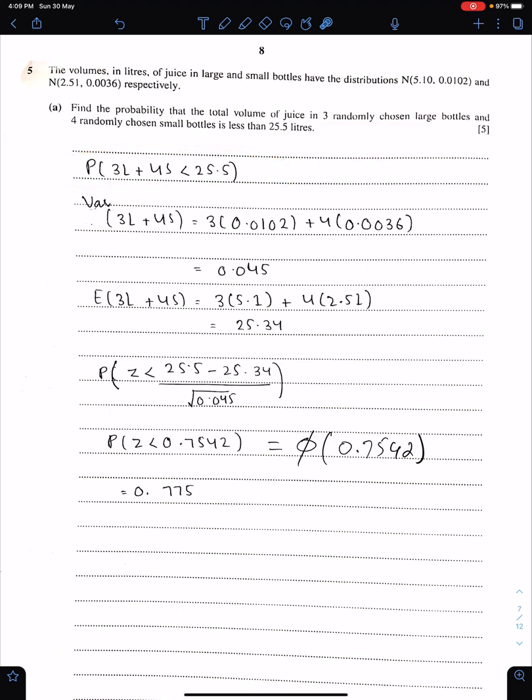Three randomly chosen large bottles means 3L plus 4S is less than 25.5. We need this probability. First, we need to find mean and variance of this quantity, 3L plus 4S. Since these numbers are sums, therefore, we must not square these numbers. We just need to copy 3 as it is and 4 as it is. This is the variance of L and this is the variance of S. This is the total variance. You can say this is sigma square. And this is mu. Mean is simple. Three times mean of L, four times mean of S.